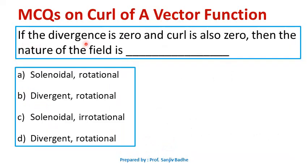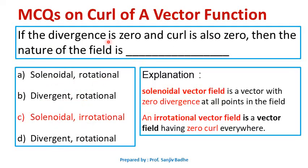This is the last question in this session. If divergence is 0 and curl is also 0, then the nature of the field is — options are solenoidal/rotational, divergent/rotational, solenoidal/irrotational, divergent/rotational. When divergence is 0, the vector field is called solenoidal, and when curl is 0, the vector field is called irrotational. So the correct option is solenoidal and irrotational — option C.